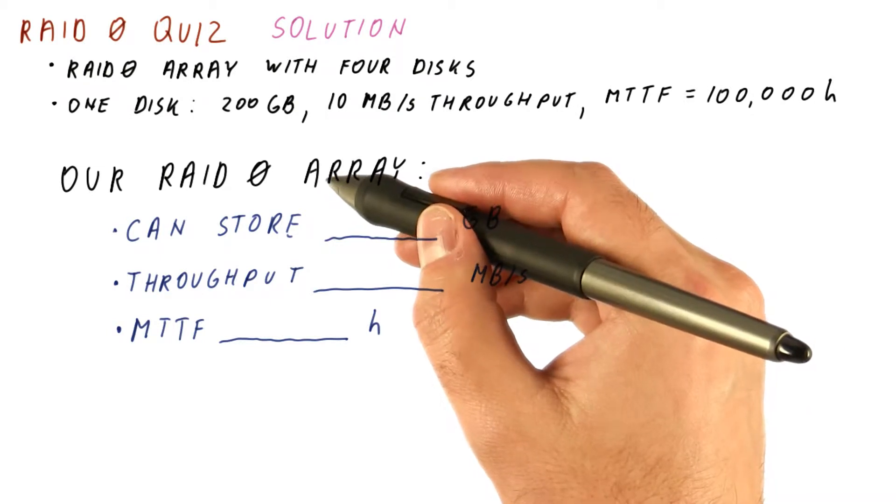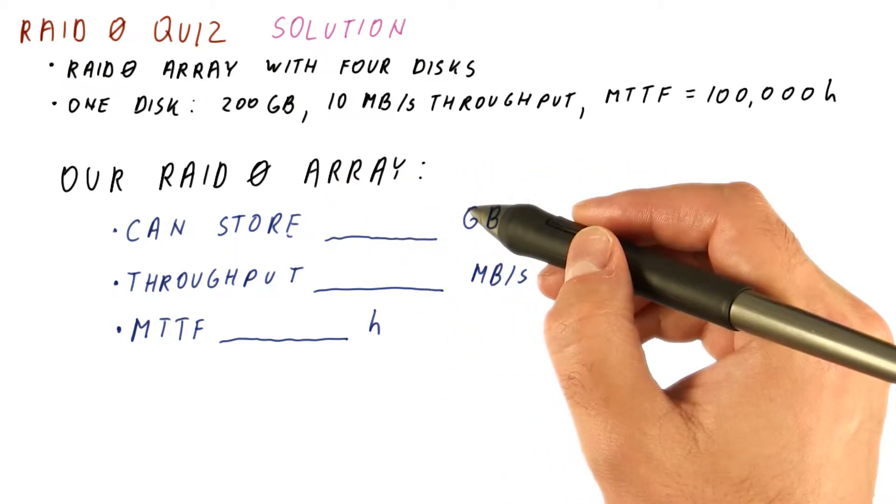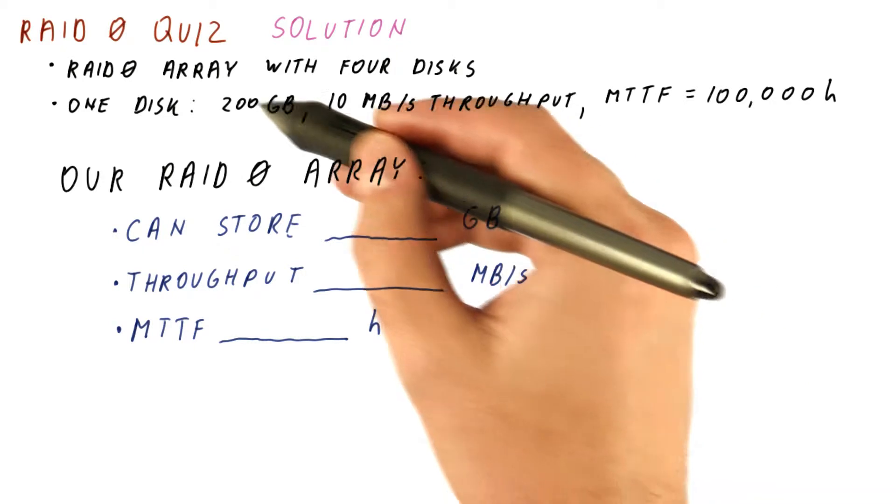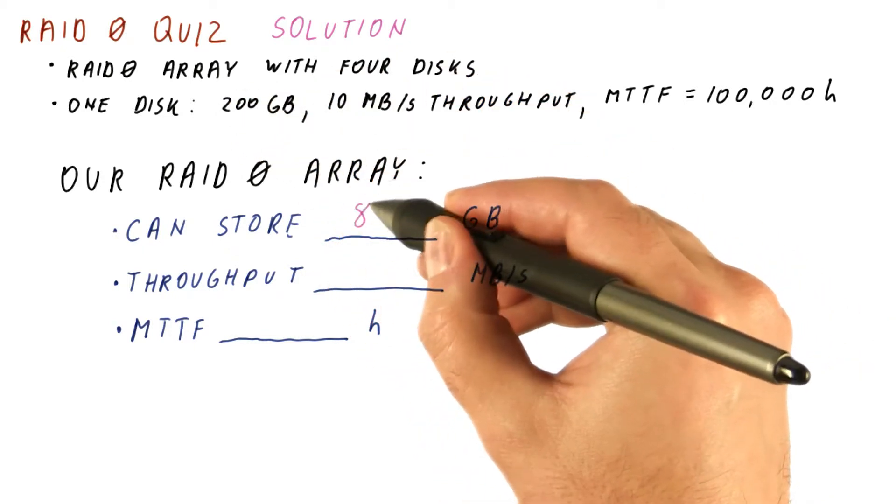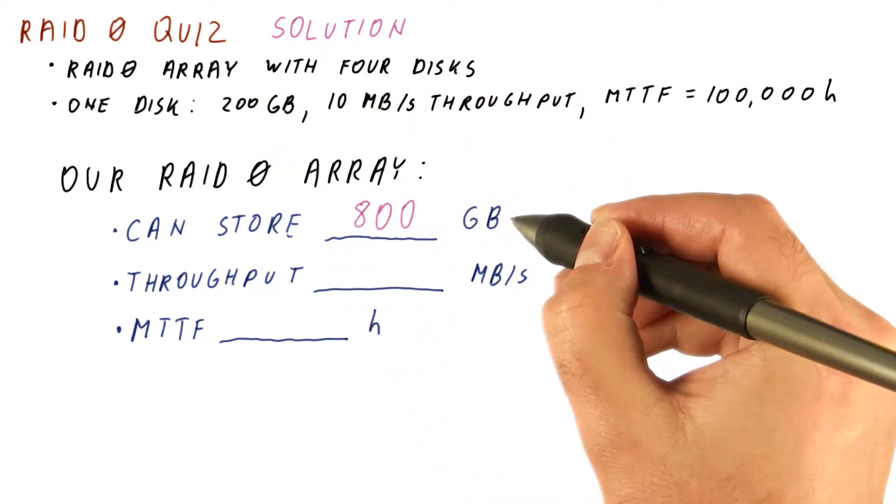In RAID 0, we're striping the data across all the disks with no redundancy. So we can use the capacity of all four disks and thus get 800 gigabytes in capacity.